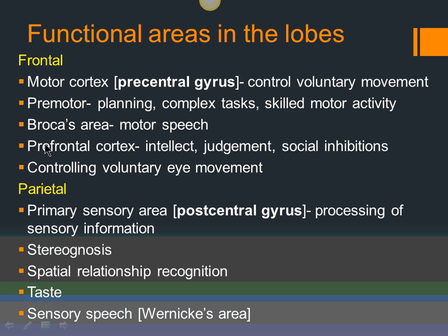There is another area in the frontal lobe called Broca's area, responsible for motor speech — the very act of talking. If this area is damaged, you won't be able to articulate words properly. You'll understand everything someone says but cannot produce speech correctly. In your head you know what you want to say, but it comes out wrong or not at all.